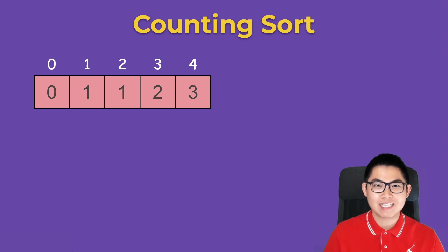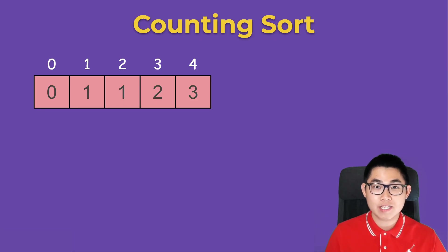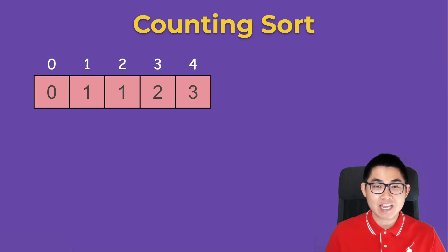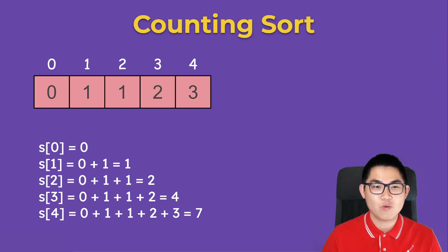We're now on to the second part of counting sort, which is finding something called the prefix sums. There are two ways to do this: the first way is the intuitive way, which helps us understand why counting sort works, and the second way is the fast way. I'm going to show you both.